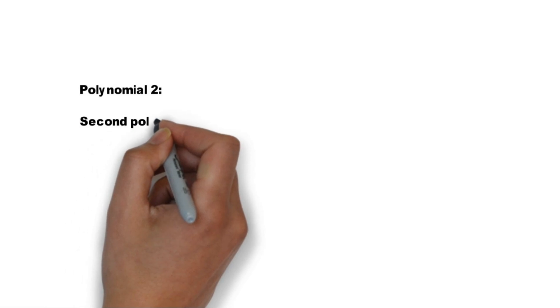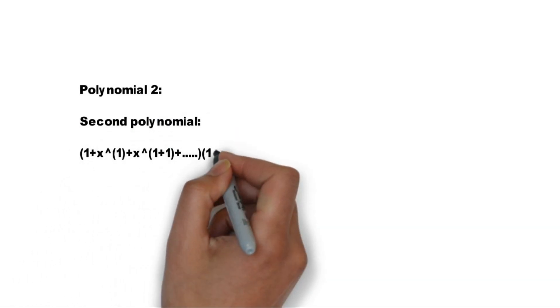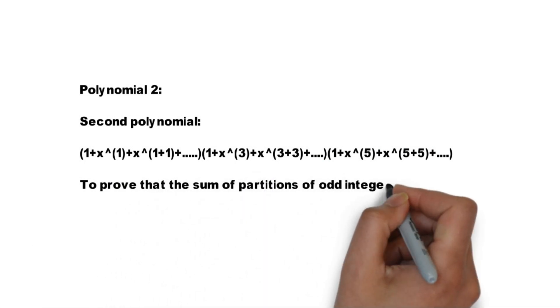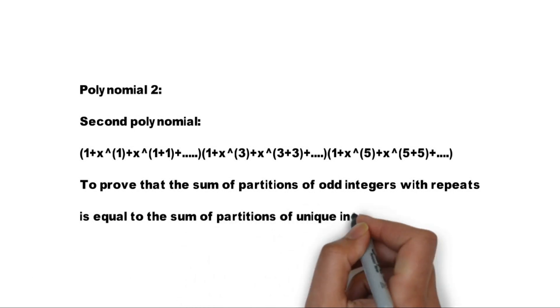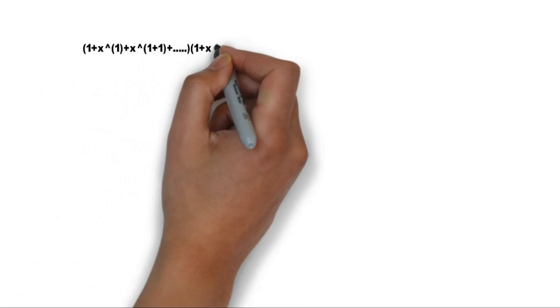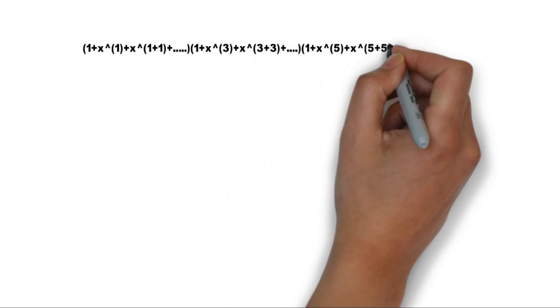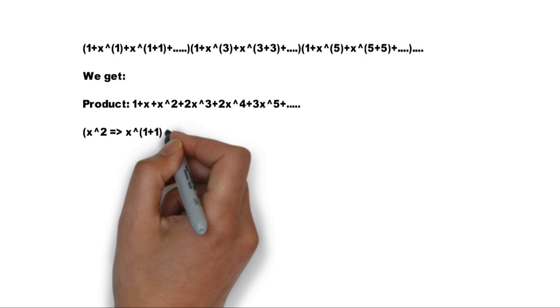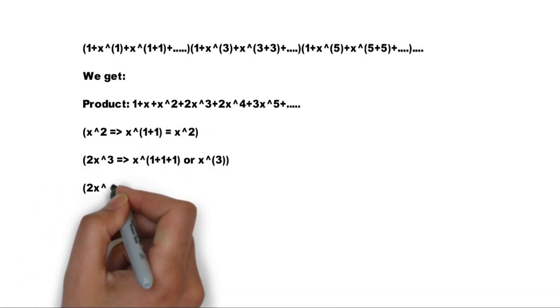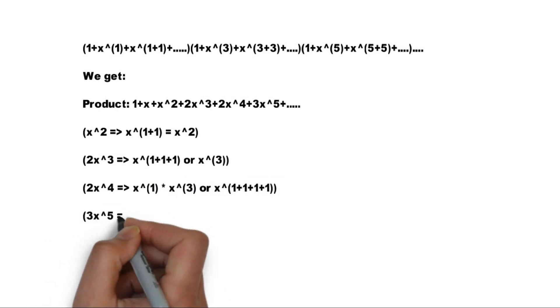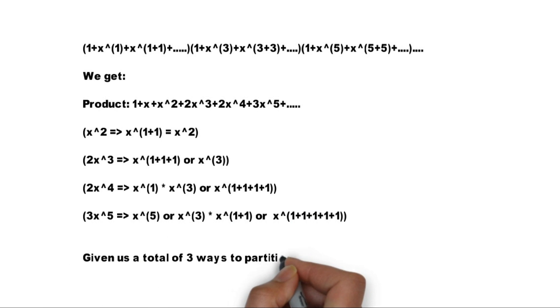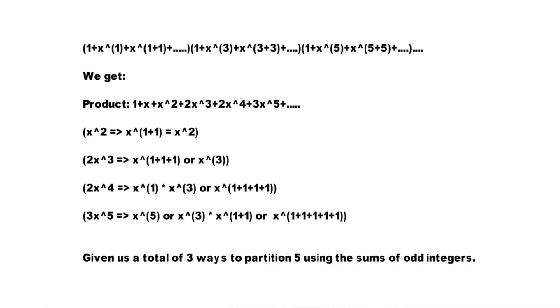Similarly, Euler proposed that we can use a second polynomial expressed as 1/(1 - x) · 1/(1 - x³) · 1/(1 - x⁵) · ... and so on, to show that the number of partitions into odd integers equals the number of partitions into unique integers. If we take the product of this infinite polynomial, we get one way to get 1, one way to get x, one way to get x², two ways to get x³, two ways to get x⁴, three ways to get x⁵ — where the exponent is the number being evaluated and the coefficient is the number of partitions of that number.